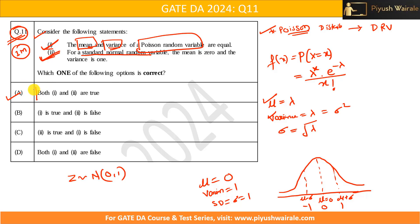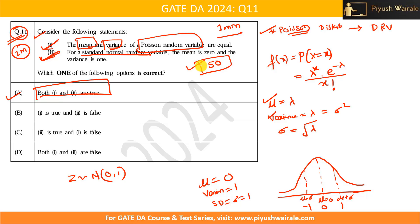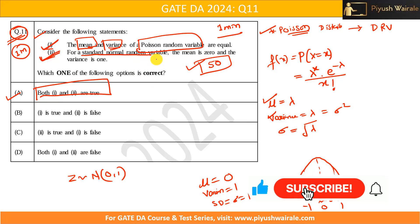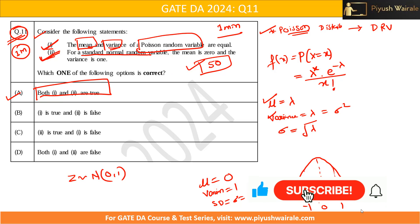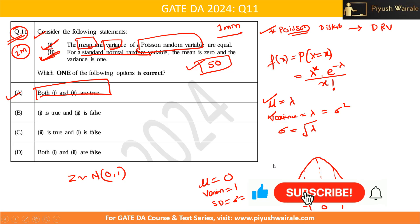Since both statements are correct, the answer is option A — both one and two are correct. You can solve this question in one minute for one mark, as long as you know these concepts. Please don't think this type of question won't appear in GATE. Almost 50% of GATE questions are easy, but the huge syllabus and time constraints are what make the exam difficult. I hope you understand this question.